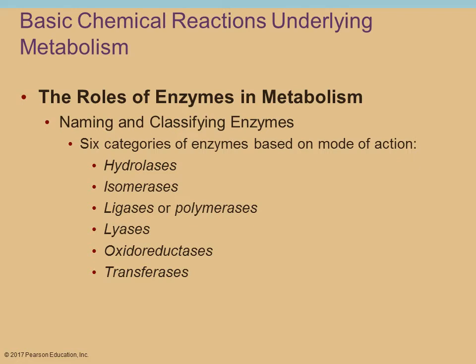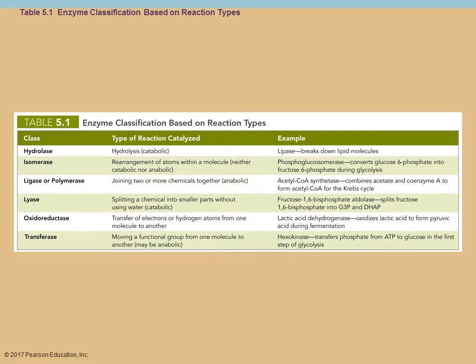All enzymes can be classified as one of six different types, classified according to their mode of action. This classification is also used as a means of naming enzymes. For part of my master's work I discovered a new enzyme, and you don't get to name it after yourself — you use this guide based on the mode of action to classify and help name the enzyme. There is a table showing the six different classifications, what type of reaction each enzyme is involved in, and an example.